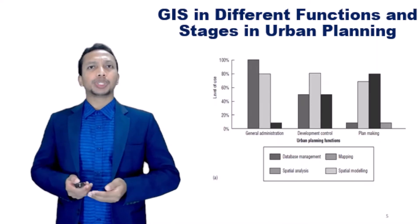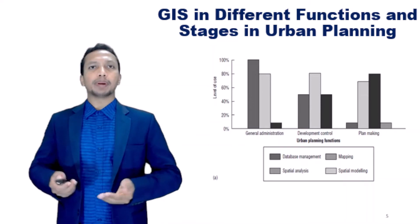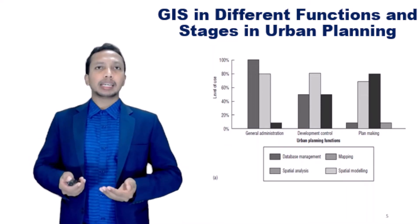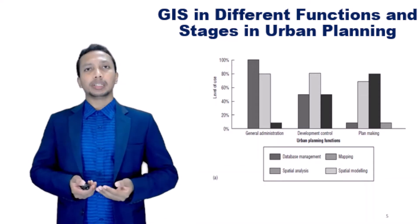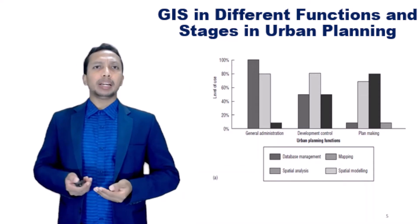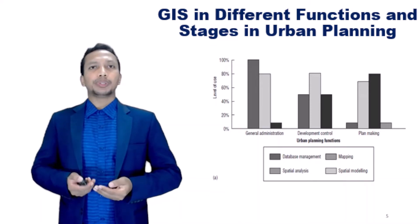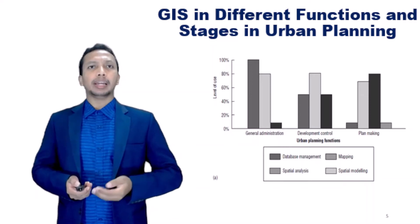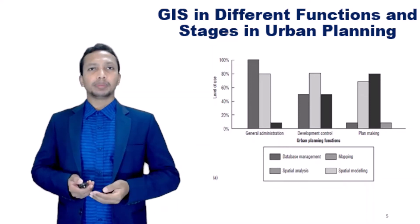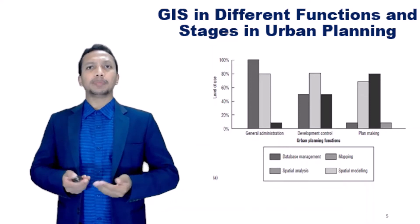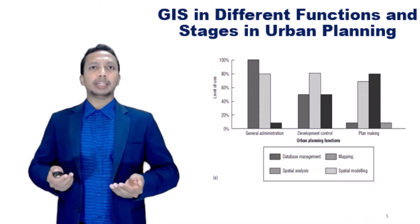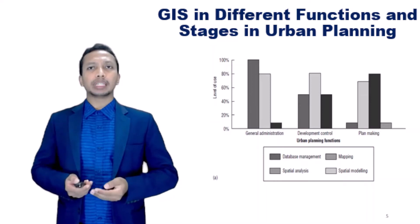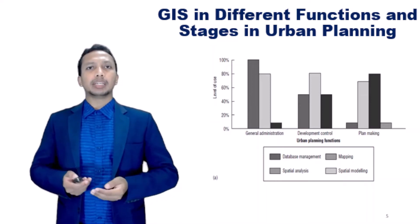GIS in different functions and stages in urban planning. Urban planning involves many functions, scales, sectors, and stages. In general, the functions of urban planning can be classified into general administration, development control, plan-making, and strategic planning. General administration and development control are relatively routine planning activities, whereas plan-making and non-routine strategic planning are undertaken much less frequently.